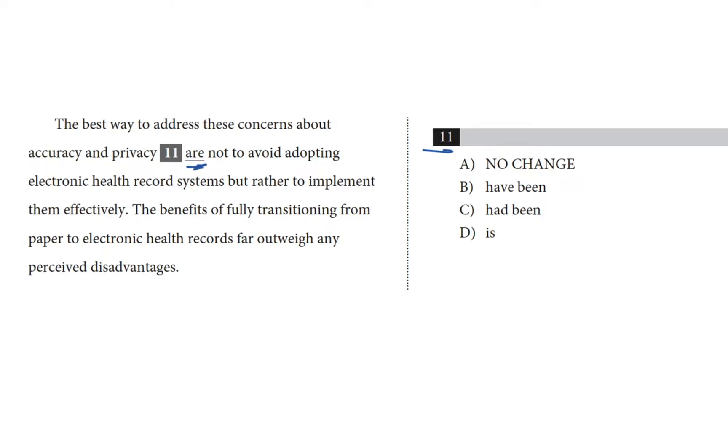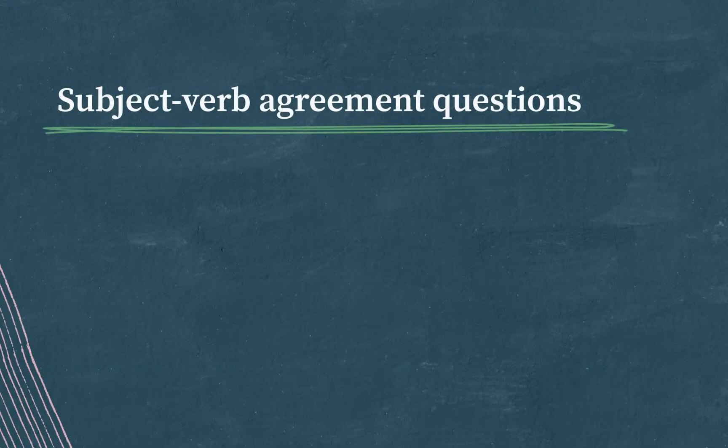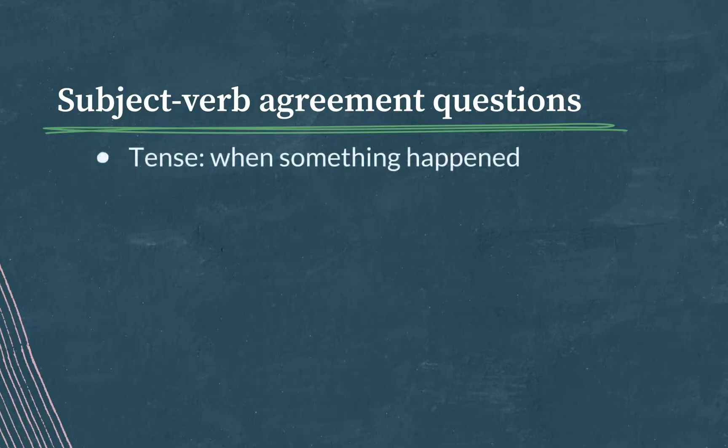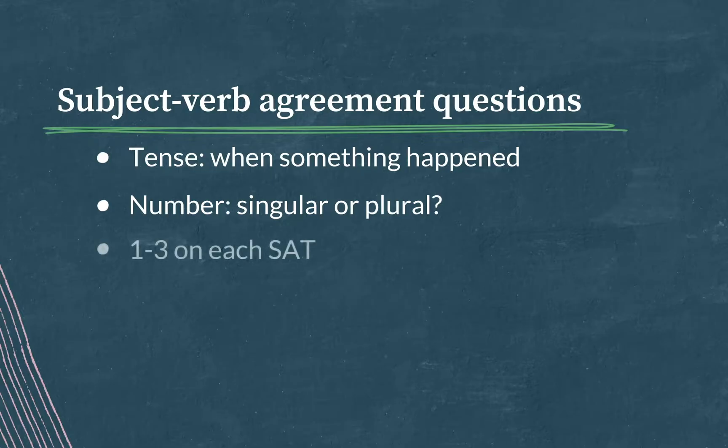Whenever I see a bunch of different verb forms here in the choices, I know that one of the things I'm going to have to check for is subject-verb agreement. We're looking for agreement in both tense and number. Tense is when something happened - is it happening now, did it happen in the past? And number is about whether or not the subject of the sentence is singular or plural. Are we talking about one thing, or more than one thing? Subject-verb agreement questions will show up between one and three times on test day.